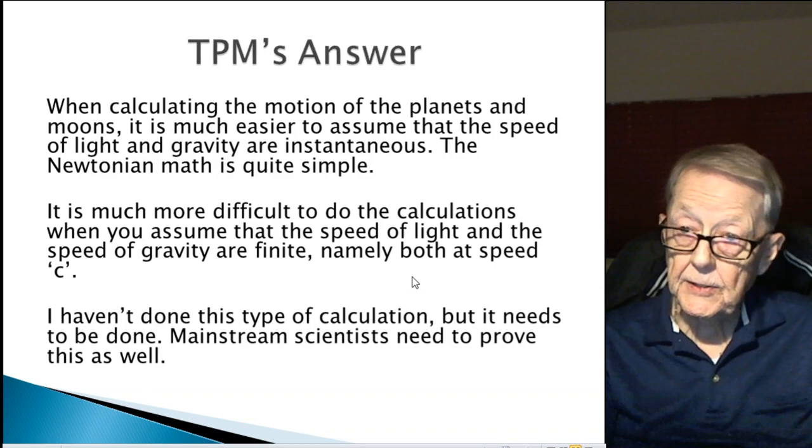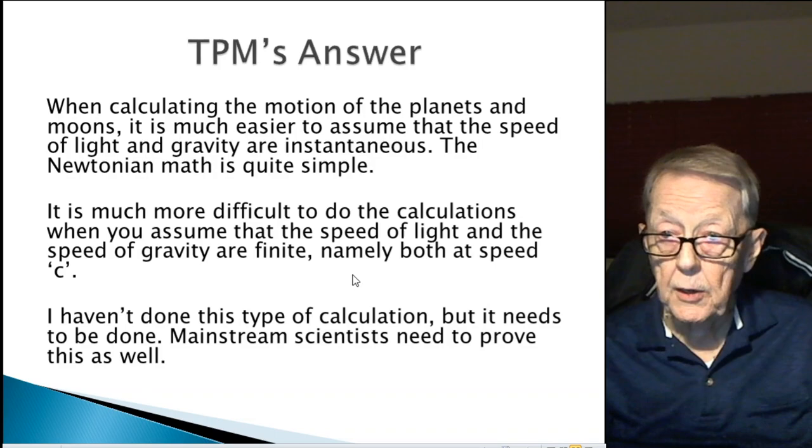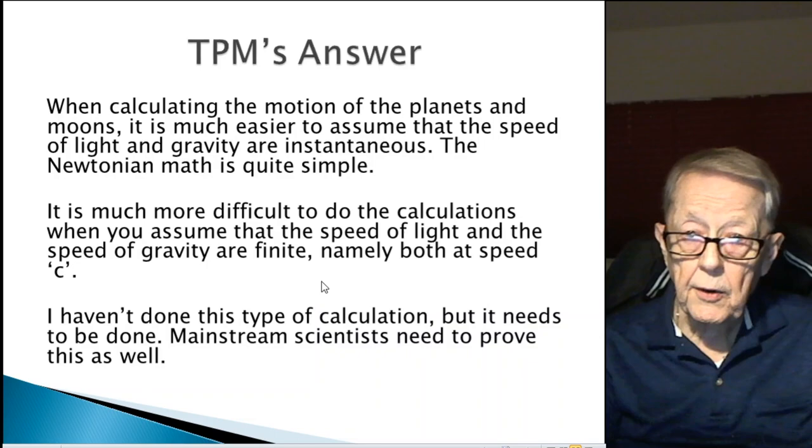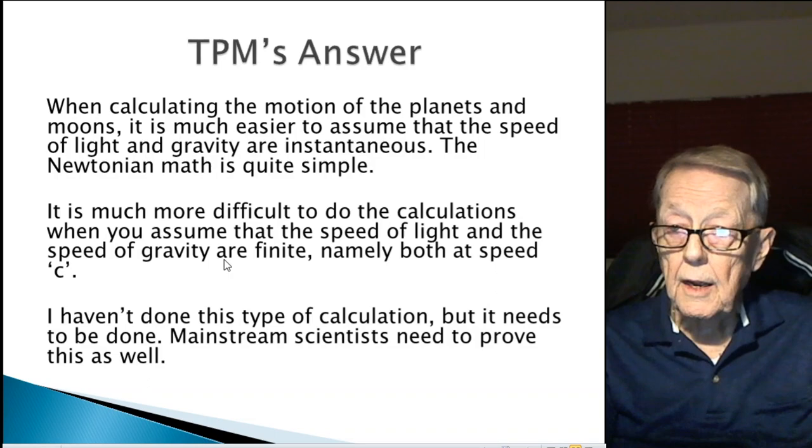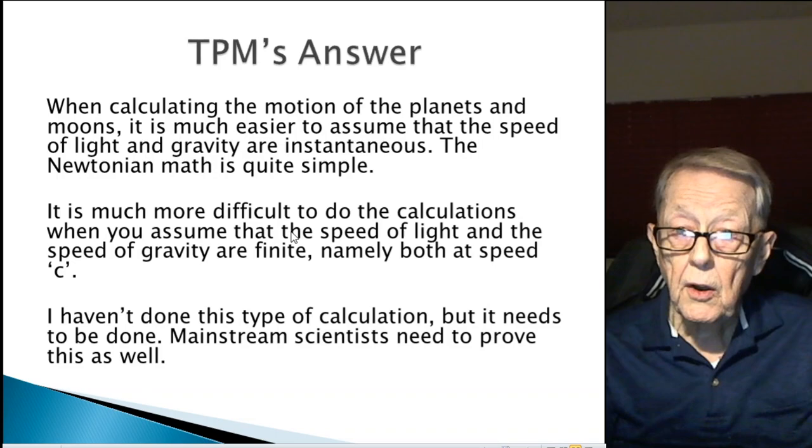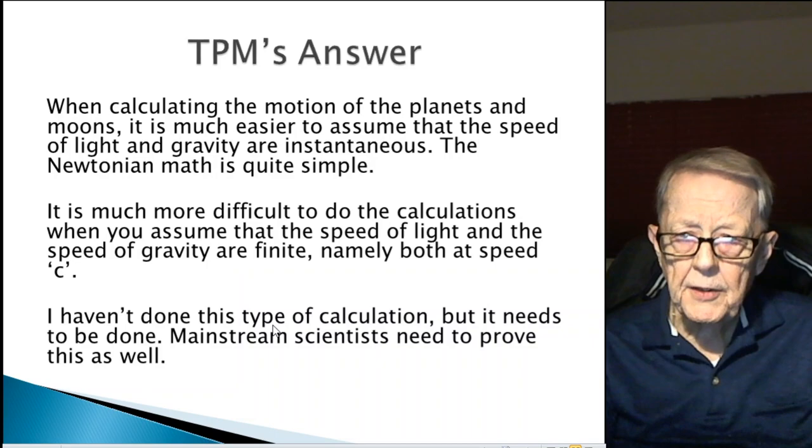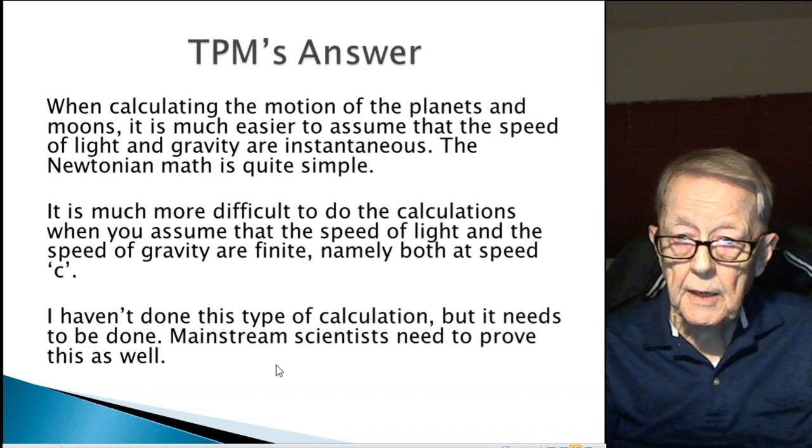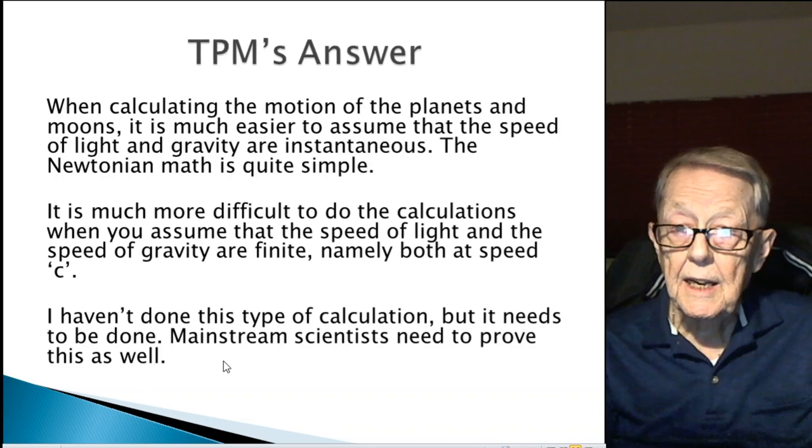It is much more difficult to do the calculation when you assume that the speed of light and the speed of gravity are finite, namely, both at speed c. Because now you say, well, it's leaving now, but the earth is moving in the orbit, and it's spinning. And by the time it gets here, where is it? And where is the gravity hitting? And, you know, it gets quite complicated. This is simple up here. This is easy to do, and I've done it that way myself, even though I know this is the way it's working. I haven't done this type of calculation, but it needs to be done. But it is difficult, and mainstream scientists need to prove it as well.